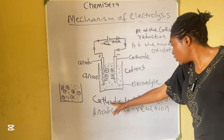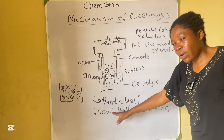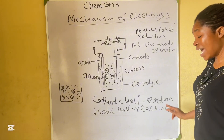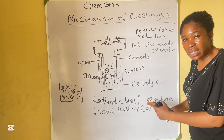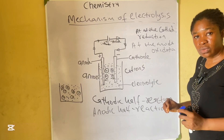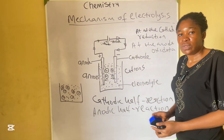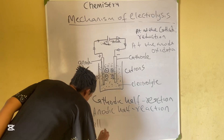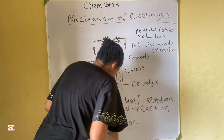The cathodic half-reaction takes place at the cathode and the anodic half-reaction takes place at the anode. When you combine the two reactions together — that is, the algebraic addition of the two half-equations — you obtain what we call the overall reaction.